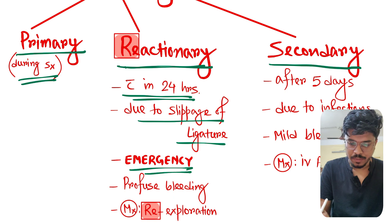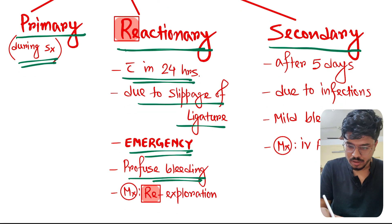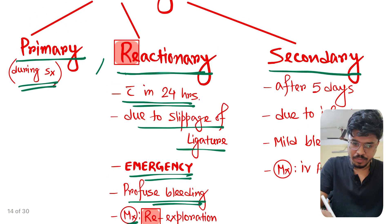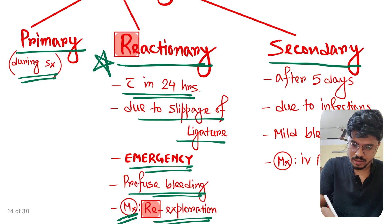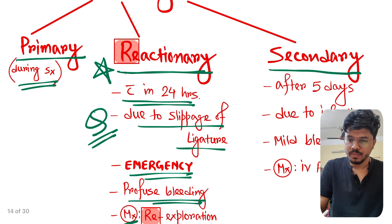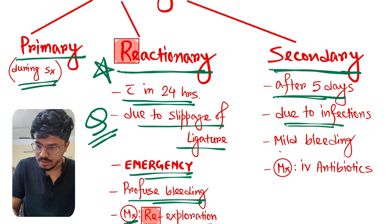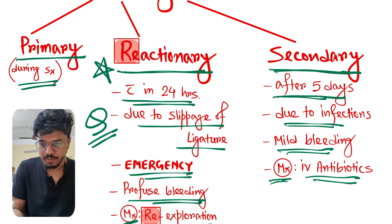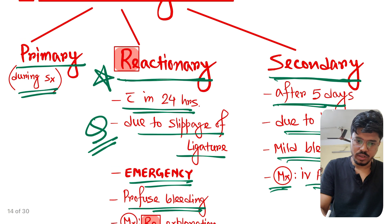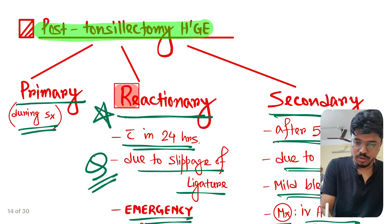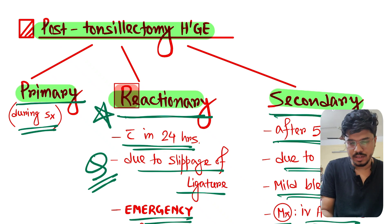There can be profuse bleeding. Management is re-exploration. Reactionary hemorrhage is very very important and this is a previous year question. Secondary hemorrhage occurs after five days due to infection. There is mild bleeding, not profuse bleeding, and management is IV antibiotics.